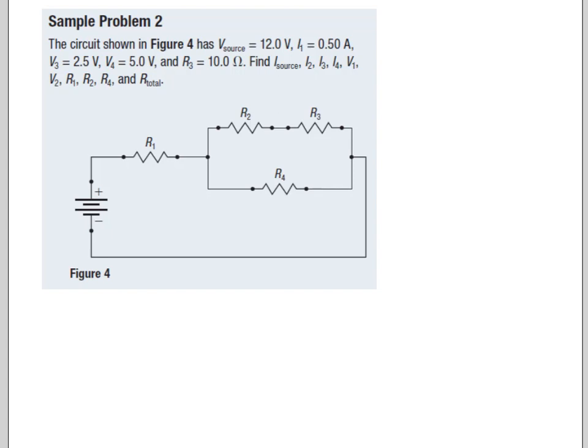Okay, so here we go. We have series nested inside a parallel inside a series. Okay, so we're going to have to do a little bit of juggling here. So let's write down what we know. Our source, let's say our source is 12 volts. Our current is 0.50 amps at R1. Our V3 is 2.5 volts. Our V4 is 5 volts. Our R3 is 10 ohms. And we want to find the source, the totals, a bunch of things.